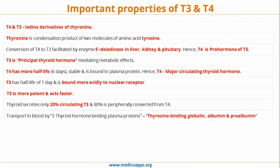Transport of thyroid hormones in the blood occurs via three thyroid hormone binding proteins: thyroxine-binding globulin, albumin, and prealbumin, of which thyroxine-binding globulin is the major thyroid hormone binding protein.